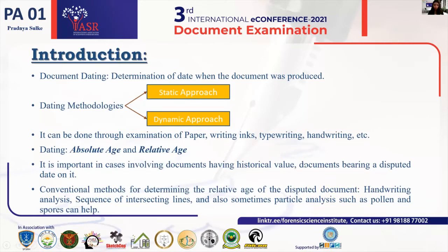The question comes: why is dating of documents important, and in which cases does it play a key role? It is important in cases where the document being disputed has a historical value and the age of the document itself is disputed. Dating of documents can be done through paper analysis, ink analysis, printing ink analysis, toner analysis, or watermark analysis. Other conventional methods include handwriting analysis, determination of the sequence of intersecting lines, and particle analysis including pollen and spore analysis. Among all these, dating through ink analysis is more prevalent.